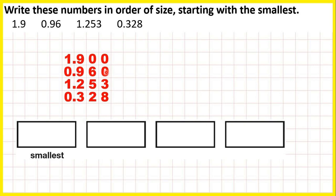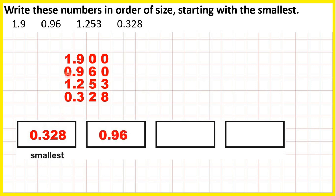We can write zeros in empty squares, and then compare these numbers as if we were comparing whole numbers, starting with the place value on the left and working to the right if the digit is the same. In our ones place we have 1, 0, 1, 0. So one of the numbers with zero ones will be smallest. Looking at the tenths digit, here we have 9, but here we only have 3. So 0.328 with zero ones and only three tenths is smallest, then 0.96 with zero ones and nine tenths is next. Of the remaining numbers, both have 1 in the ones, but 1.253 has only 2 tenths compared to 9, so 1.253 is next, and 1.9 is largest.